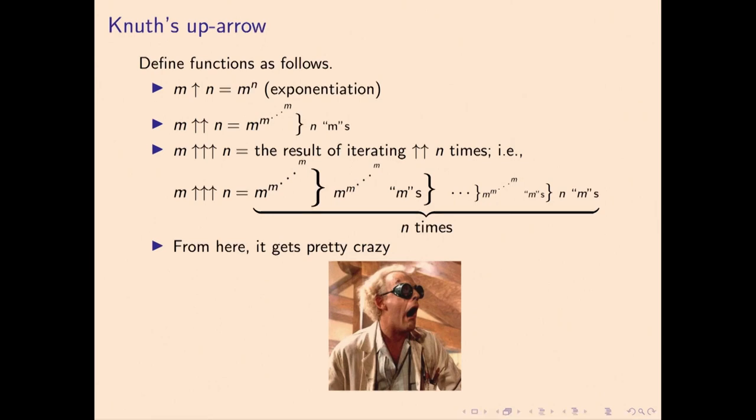There's Knuth's up arrow, which is what Ron Graham used to define his number. This is a way of using the exponential function and then iterating the exponential function and then iterating that again and again. So one up arrow is exponentiation, two is iterated exponentiation, which we can think of as a stack of m's, where m is our first argument.